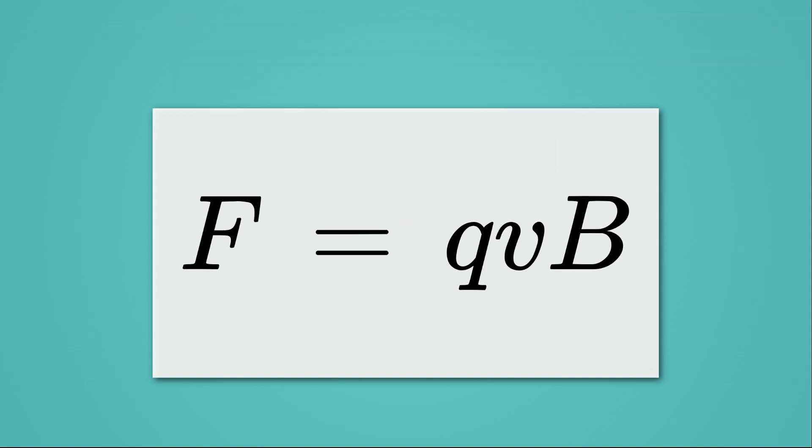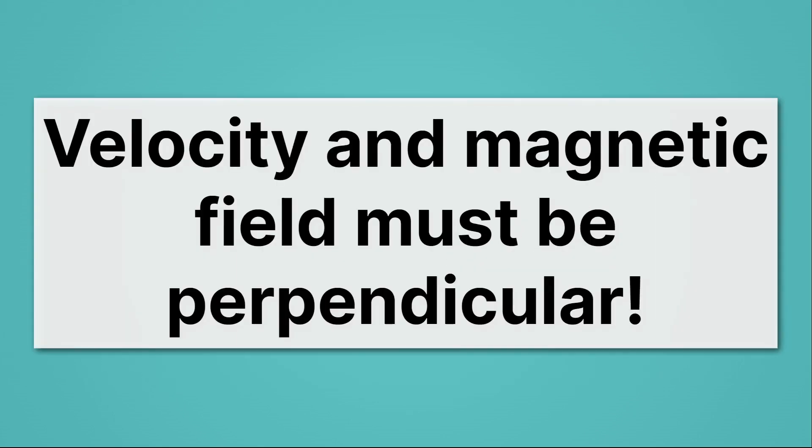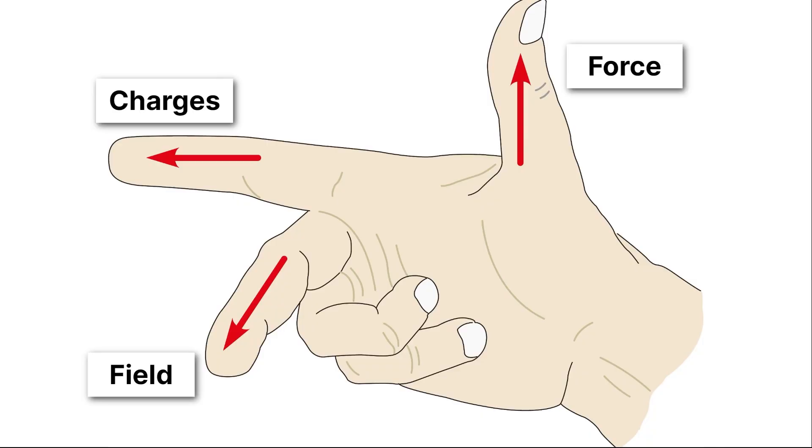All right, so here we have our equation. Now, like I said, f, v, and b are all vectors. That's the directions we're pointing with our fingers when we use the right-hand rule. And for this equation to work, velocity and magnetic field must be perpendicular to each other. If they're not perpendicular, you actually have to use a different equation, which we won't be learning. So, this is just an equation that applies when they're perpendicular to each other, like in the right-hand rule. Notice, force and charges are perpendicular to each other. There's a 90-degree angle between them. Charges and field are perpendicular. All three of these are perpendicular to each other.